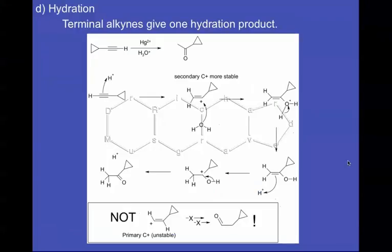We're now going to look at terminal alkynes and their hydration reactions. Now a terminal alkyne is so called because it has hydrogen on the end of the triple bond, and that means the triple bond is going to be at the end of the chain, hence the name terminal alkyne.